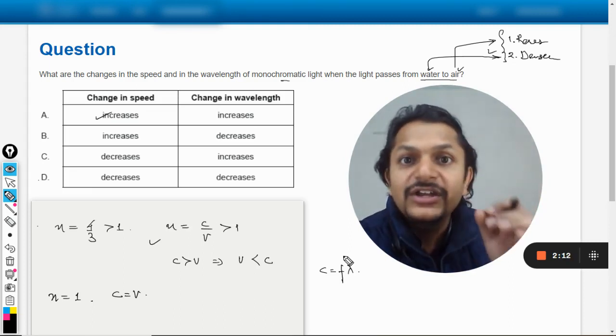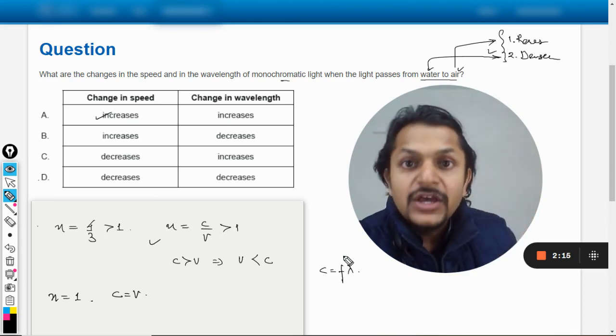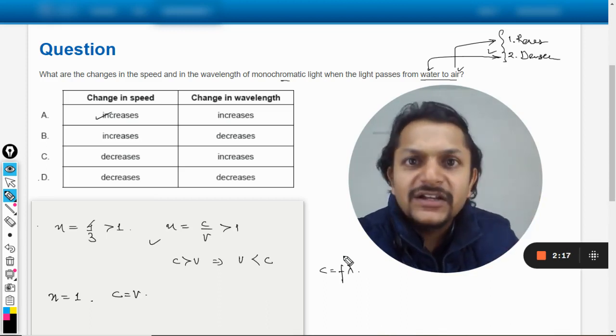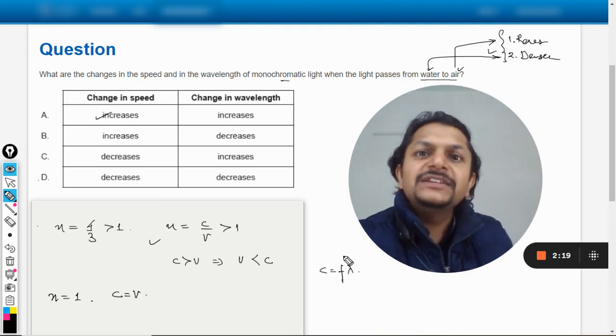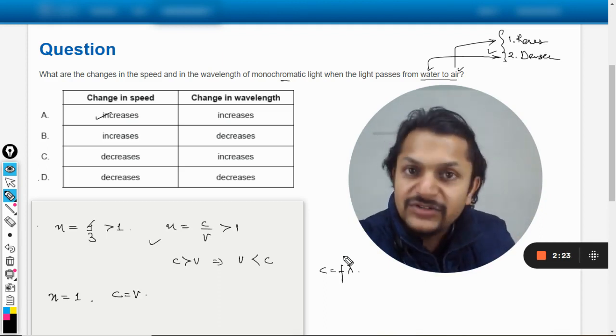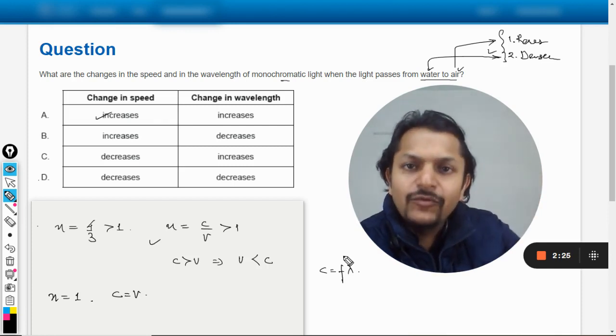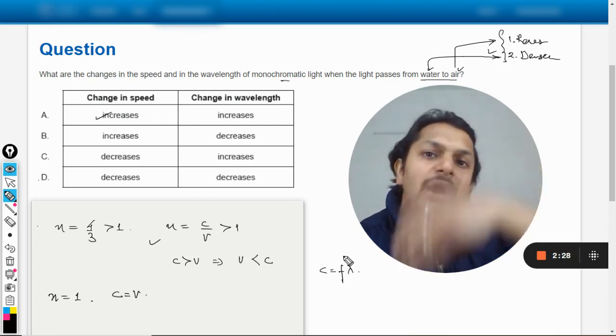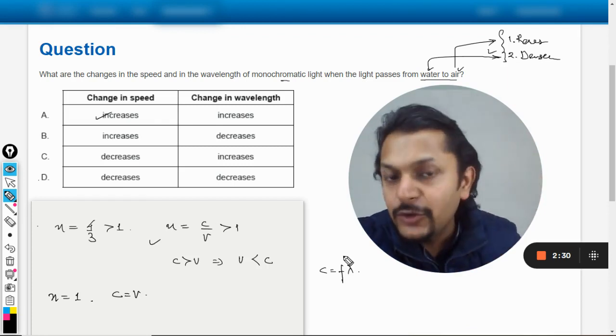Frequency is the characteristic, sorry, the color is the characteristic of frequency. Okay, so we know that the color does not change. For example, there is a bulb inside water somewhere and that bulb is red colored. So if you are inside the water the bulb is still red, and when you come out of the water even then it will look red only.